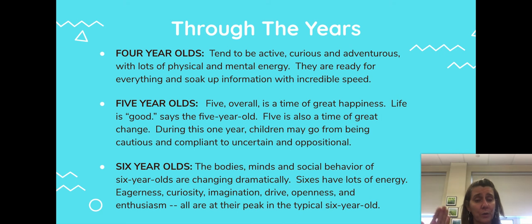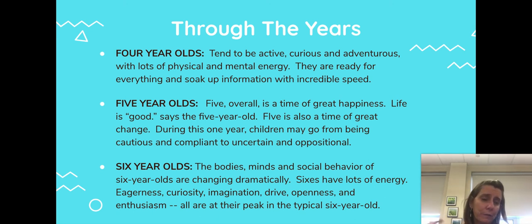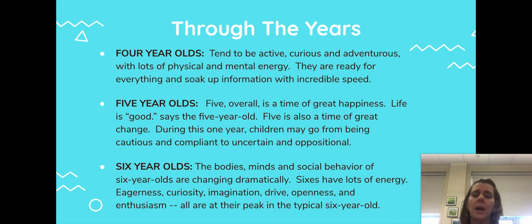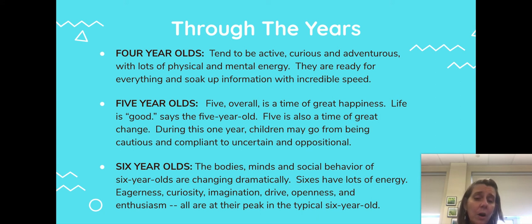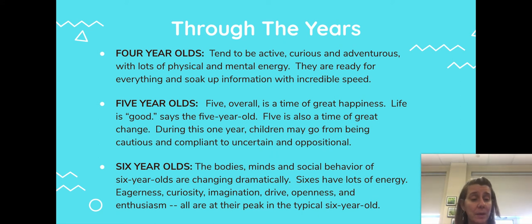When thinking about four-, five-, and six-year-olds, the book also gives a description of what that looks like. There's a link in NewsBytes that gives you the description for four-year-olds through 14-year-olds, so you can take a look at that PDF as a preview of what you'll get inside a book like Yardsticks. For six-year-olds specifically: the bodies, minds, and social behavior of six-year-olds are changing dramatically. They have lots of energy, eagerness, curiosity, imagination, drive, openness, and enthusiasm — all at their peak. Those little descriptions help you begin to understand where your child might be in their developmental phase.